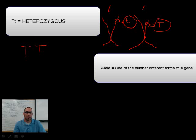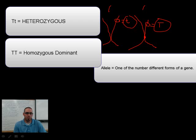In this case, this T might be dominant over the lowercase t, and we wouldn't see this lowercase t in a phenotype. The other one here is what's called homozygous dominant. It's homozygous dominant because I have two capital Ts, and those two capital Ts both are that dominant trait.